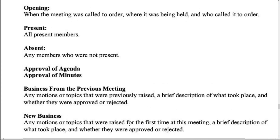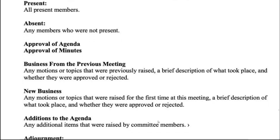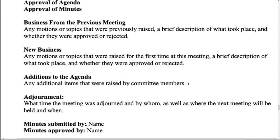Under 'New Business,' include any motions or topics raised for the first time at this meeting — a brief description of what took place and whether they were approved or rejected. 'Addition to the Agenda' covers any extra items raised by committee members beyond the planned agenda. In 'Adjournment,' you write when the meeting was finished, what time it was adjourned and by whom, and where and when the next meeting will be held.